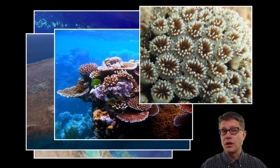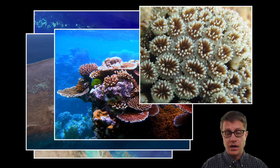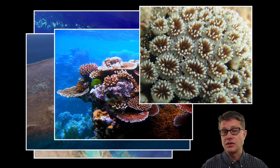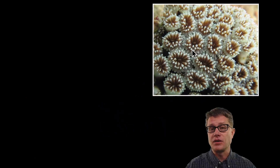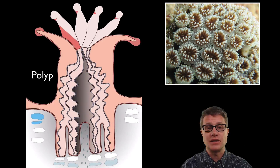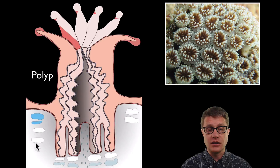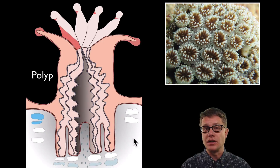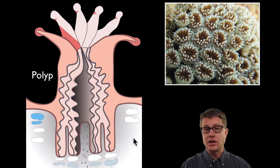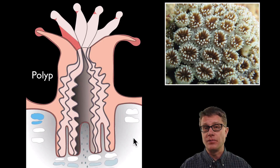Coral are tiny animals. They are invertebrates and they are all clones of each other. This is their tentacles on the top. If we look at their anatomy from the side, these would be those same tentacles. They have a mouth that serves as an anus, but they are anchored to rock. This limestone or calcium carbonate is created by the coral itself — they are laying down calcium carbonate and the reef continues to grow over time.